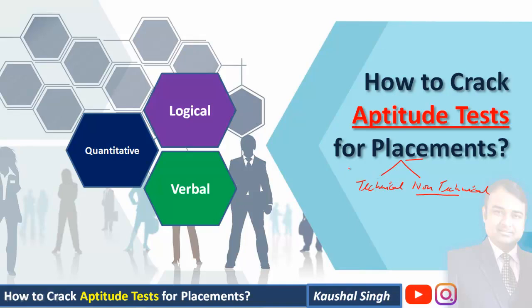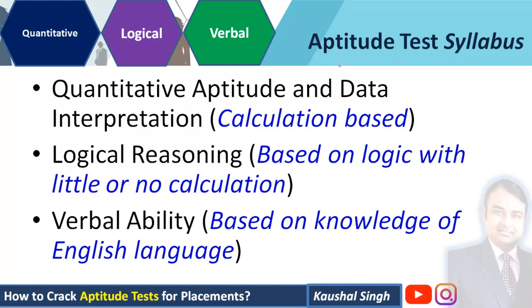Let's check how you can do that. The aptitude test comprises three main sections. First is quantitative aptitude and data interpretation, which is calculation-based. The second section is logical reasoning, which is based on logic and involves little or no calculation. The third section is verbal ability, which is based on your knowledge of the English language.